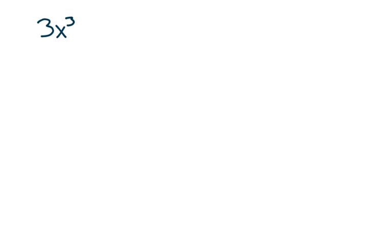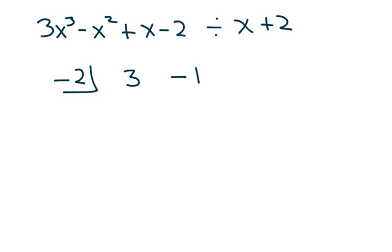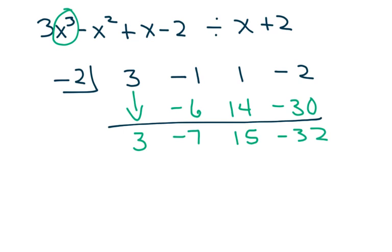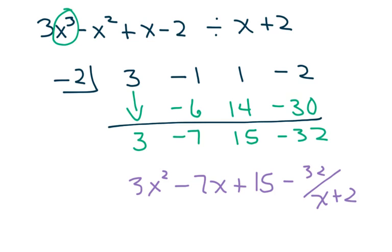Let's do 3x cubed minus x squared plus x minus 2, divided by x plus 2. I'm going to write negative 2, then write down the coefficients in descending order. The first step is to bring down the first coefficient, which is 3. Multiply and add; multiply and add; multiply and add. Since we started with x cubed, go down one: this would be 3x squared minus 7x plus 15, minus 32 over x plus 2. And that is your answer.